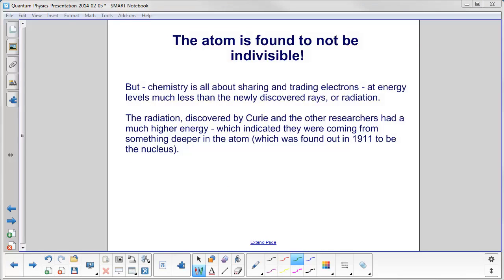Chemistry is all about sharing and trading electrons at energy levels much less than the newly discovered rays or radiation. This radiation, discovered by Curie and others, had a much, much higher energy. This indicates that they were coming from something deeper in the atom, which was found out in 1911 to be the nucleus.